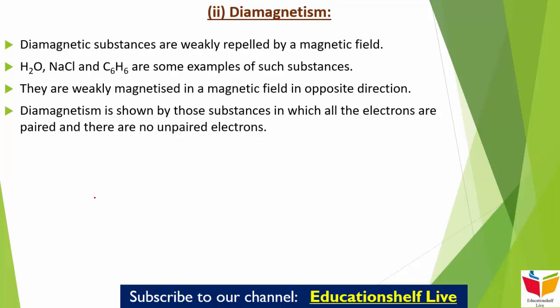दूसरी category है diamagnetism। Diamagnetic substances जो होते हैं, they are weakly repelled by a magnetic field। Examples हैं H₂O, NaCl, C₆H₆ — यानि water, salt और benzene। ये बहुत ही weakly magnetized होते हैं magnetic field में, और ये opposite direction में magnetized होते हैं। Diamagnetism is shown by those substances in which all the electrons are paired and there is no unpaired electron। Pairing की वजह से जो magnetic moment है वो cancel हो जाता है, इसलिए इनमें magnetic character देखने को नहीं मिलता।